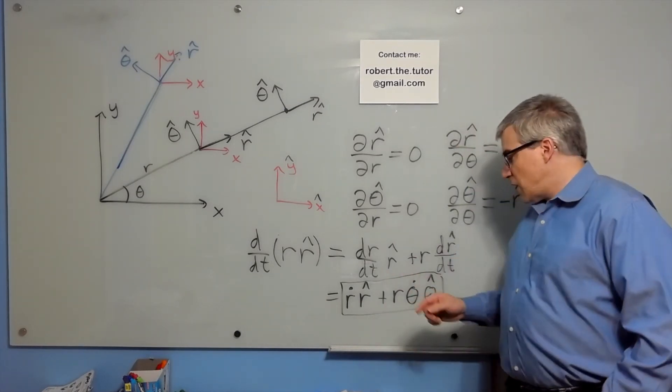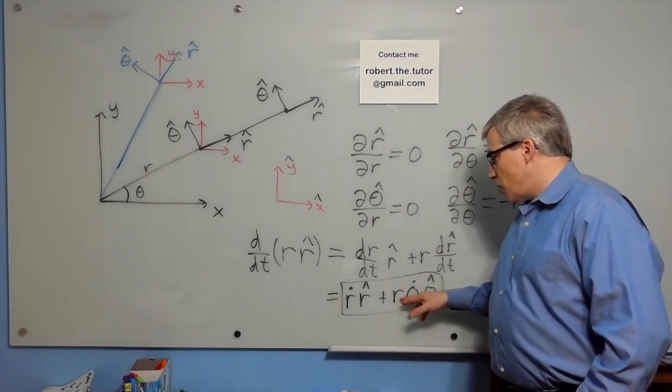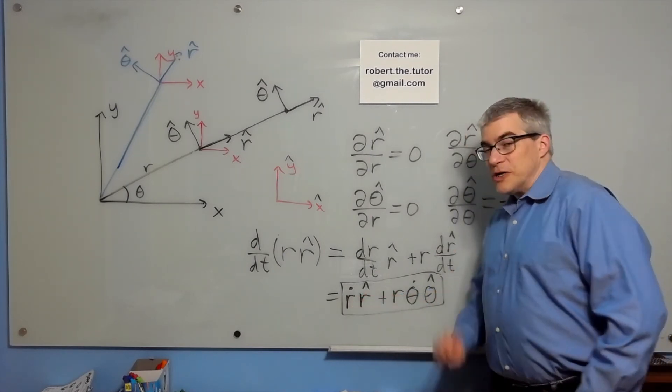That is velocity in polar coordinates. Because you can have velocity because you are changing your r, or because you're changing your theta.